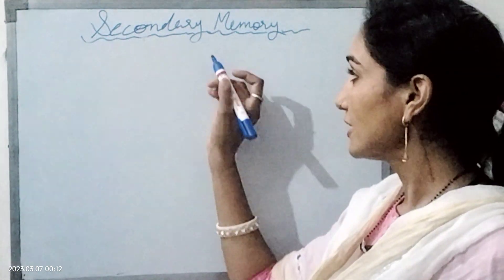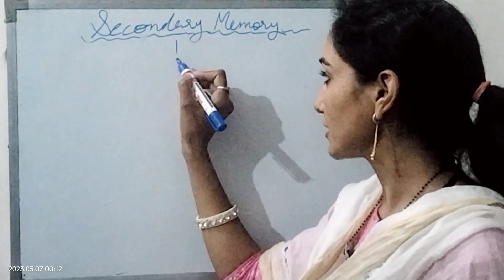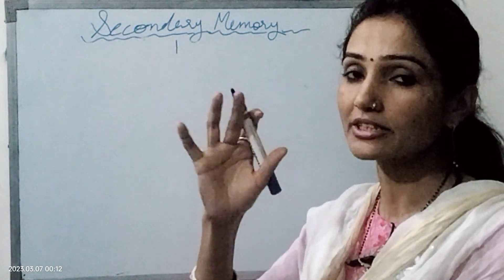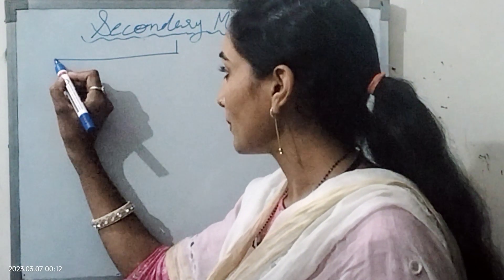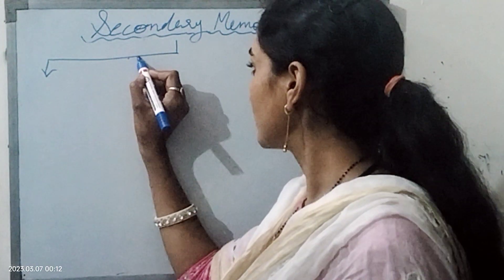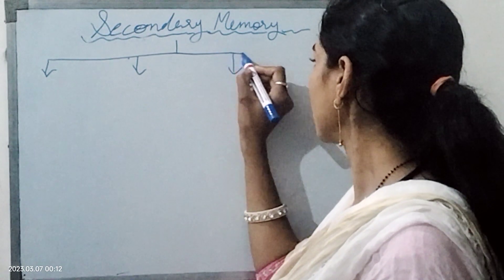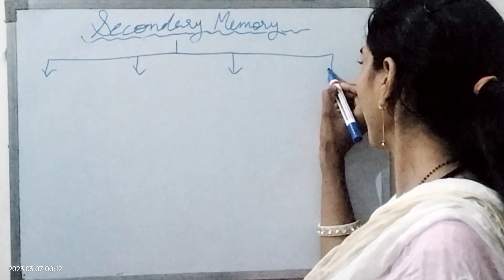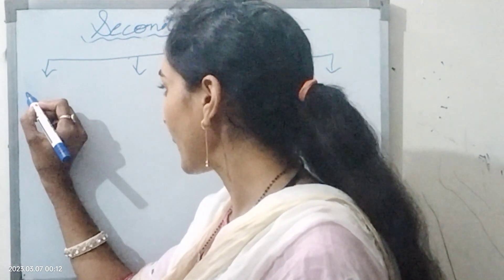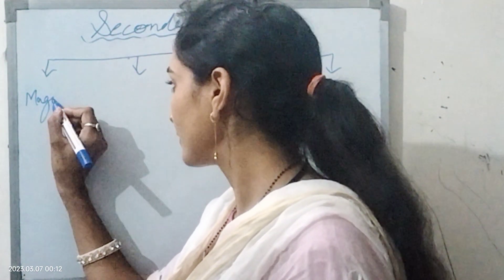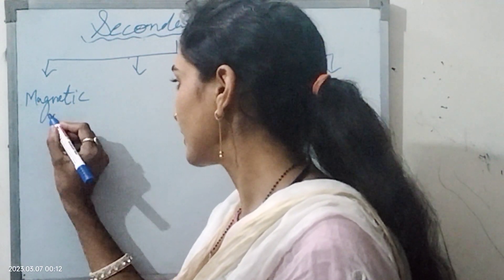Now let's see how many parts secondary memory is divided into. There are 4 types of secondary memory. The first one is magnetic tape.